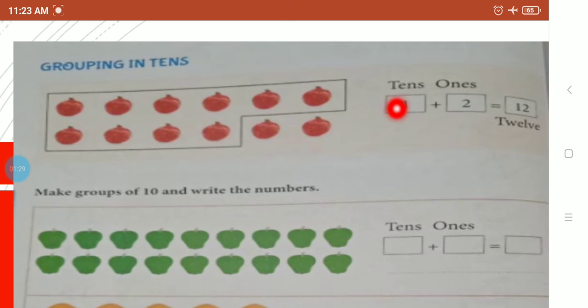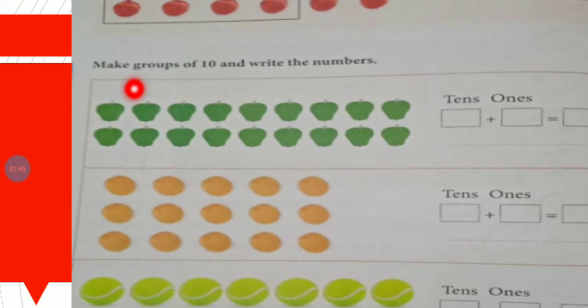We will group only ten. We will make one bunch of ten. So how many bunches are here? Because it's twelve, one ten is one bunch, plus two ones makes twelve. Make groups of ten and write the numbers.